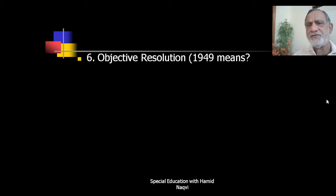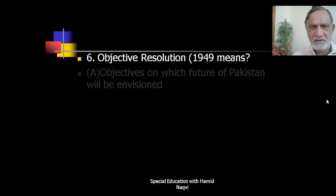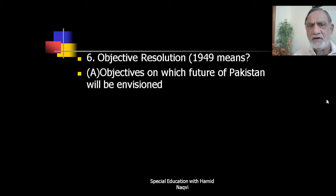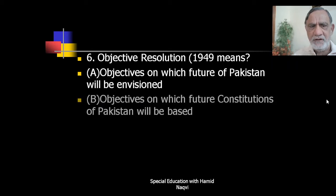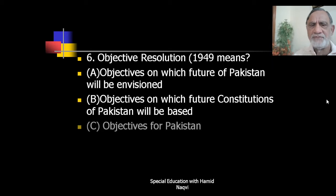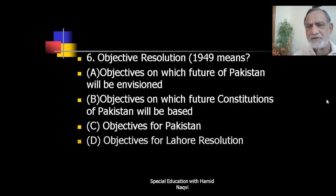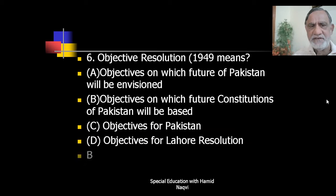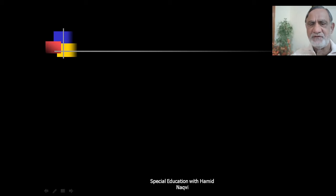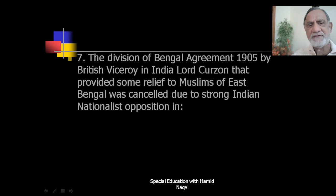Objective Resolution 1949 means what? Options: objectives on which the future of Pakistan will be envisioned; objectives on which the future constitution of Pakistan will be based; objectives for Pakistan; or objectives for the Lahore Resolution. The correct option is B — objectives on which the future constitution of Pakistan will be based.